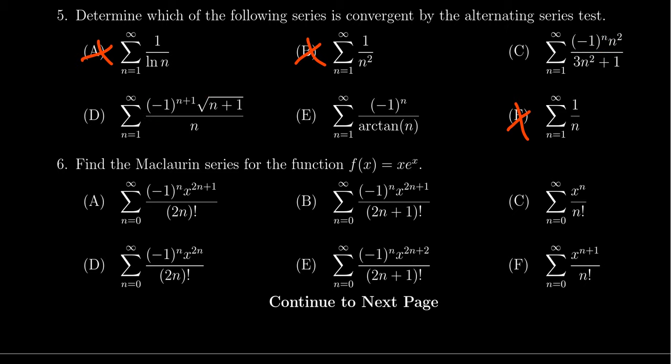Now notice here that choice B is a P series, right? This is where P equals 2. And so as a P series, it is convergent, but we're not looking for a convergent series. We're looking for a series which is convergent by the alternating series test. So the instructions matter here a lot.